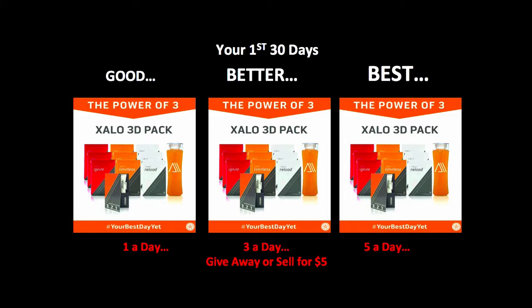But if you've got two packs, you're only spending twice as much money, but now you have three times the samples. So you could sample three a day in your first 30 days — that's 90 samples. It's three times the results for only twice the money. Whether you get one pack, two packs, or three packs, the 80-20 rule is the same — your results are just going to be three or five times greater.